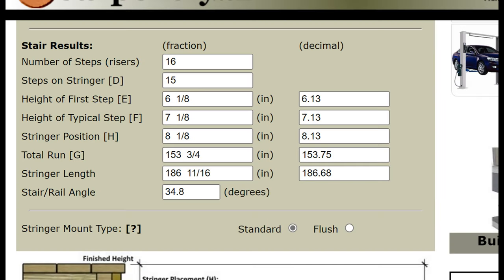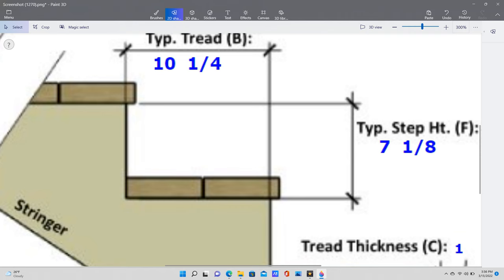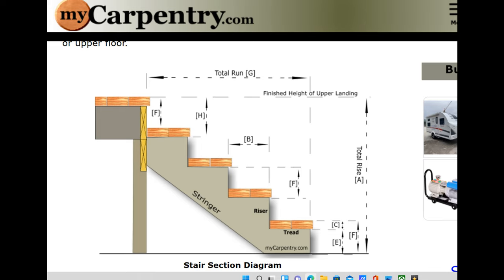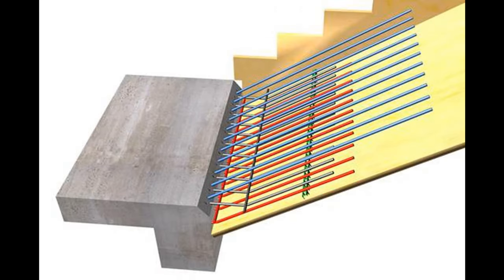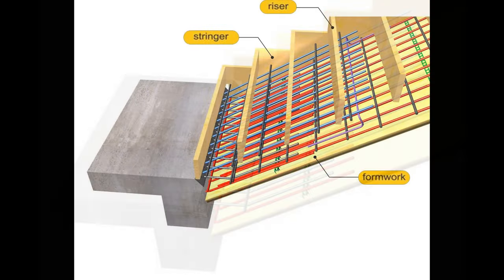So you have your calculations all done. You have the size of your risers, you have the size of your treads, you have the length of your stringer. The only thing you need now is to decide where your stringer placement is going to be. This is very very easy.